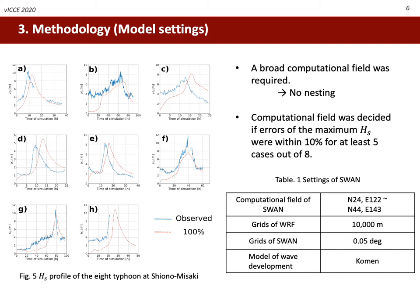The SWAN computational field was decided by the result of hindcasting of the eight typhoons. This study required a fixed and broad computational field which could contain the track of all eight typhoons, so the nesting setting was not used and the resolution of the computational field was relatively rough. Some results did not hindcast observed wave height well. However, the purpose of this study was not perfect reproduction of the wave field, so the computational domain was finalized with errors of the maximum Hs within 10% for at least five typhoons.